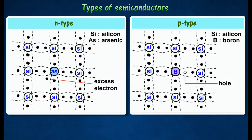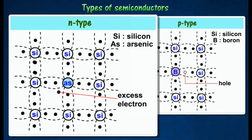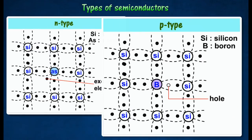There are two types of extrinsic semiconductors produced by doping: N-type semiconductor and P-type semiconductor.